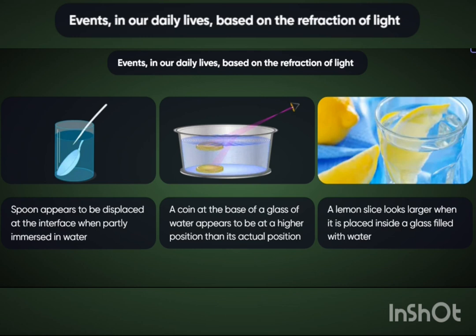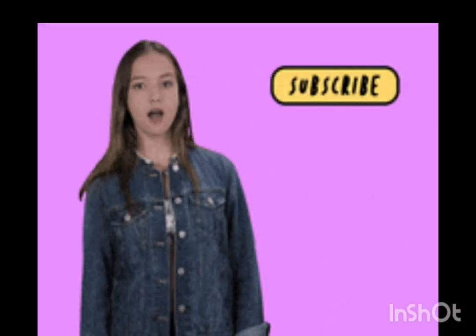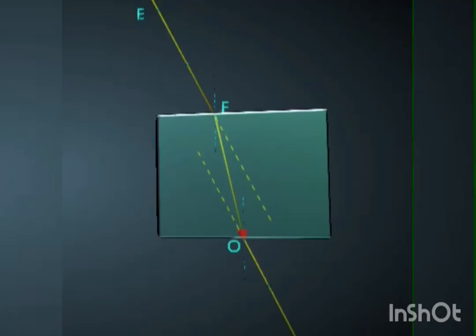Then the coin appears to be at a higher position than its actual position. Try this one also. The third case is that of a lemon slice in a glass of water. If you put a lemon slice inside a glass filled with water, then it looks larger than it usually is. Have you noticed it? Do check this one also.